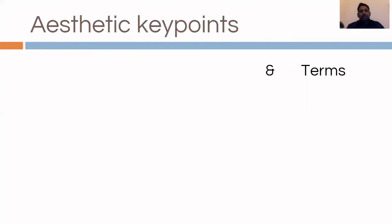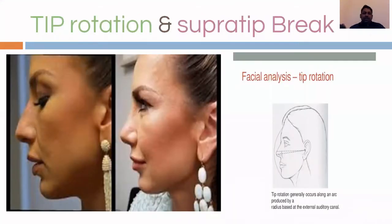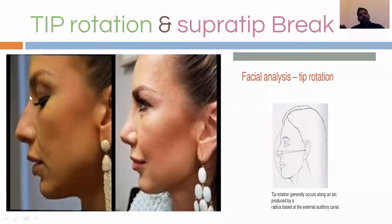Let us start with the aesthetic key points. Looking at these images — the first is the unoperated nose and the second is the operated nose. You can appreciate the difference: in the operated nose there is some angulation in the bridge, whereas the first is almost flat with a little swelling of the supra-tip region.